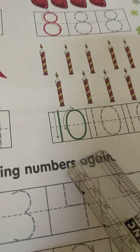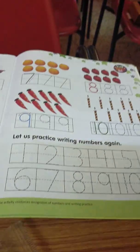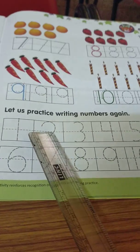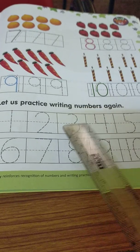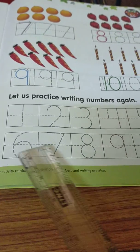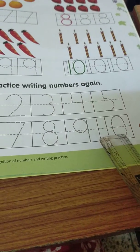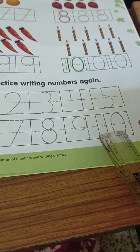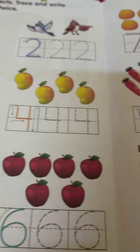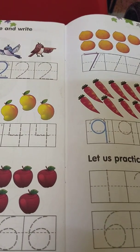So children, once again over here, you will have to trace the numbers. One, two, three, four, five, six, seven, eight, nine, one, zero, ten. So your homework will be to complete page 22 and 23. Thank you children.